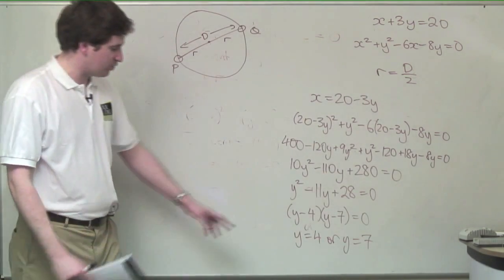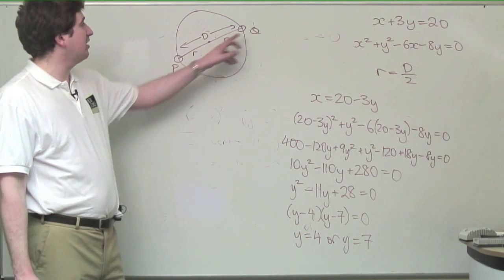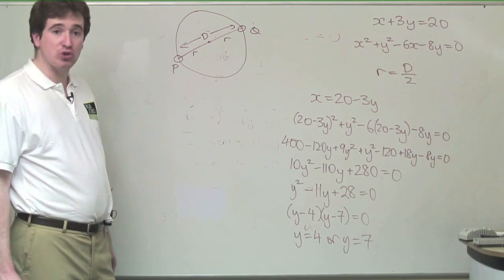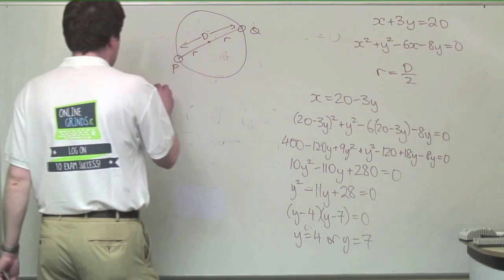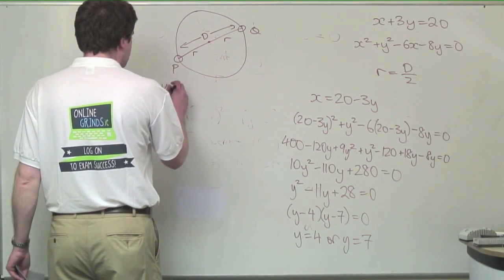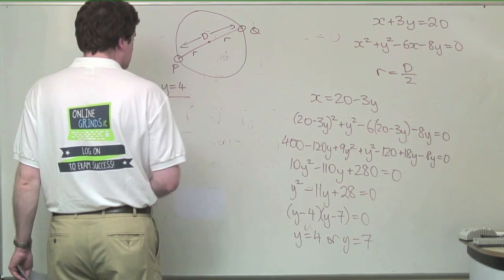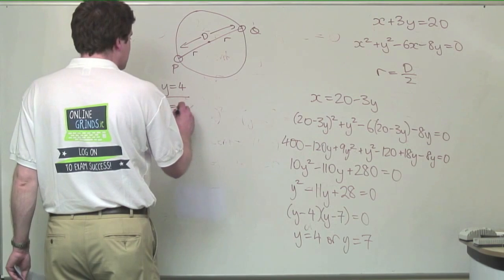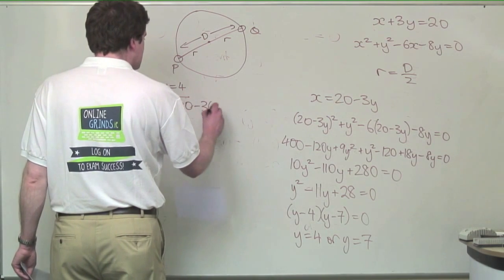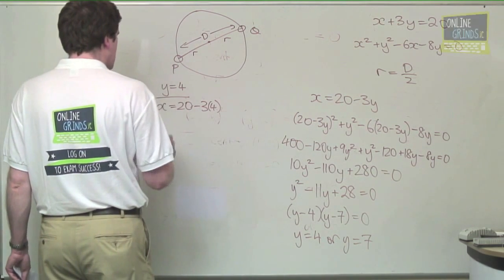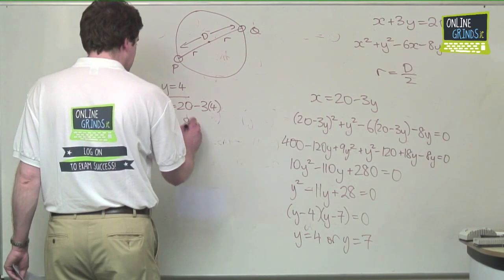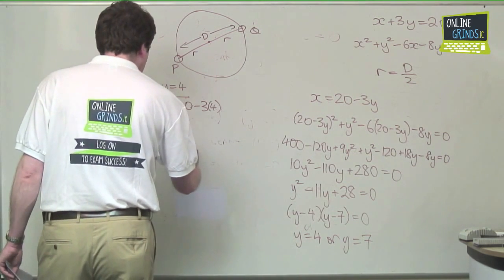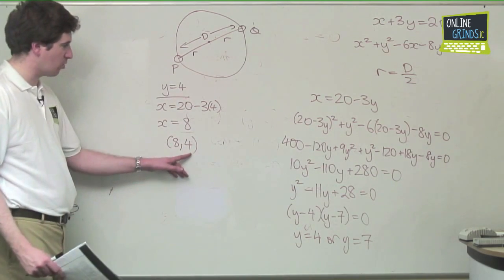So now I have found the y coordinates of my two points here, and now I simply have to find the x coordinates. In the case of y equals 4, we have a situation where x is equal to 20 minus 3 times 4, so x is equal to 8. That point there is 8, 4.